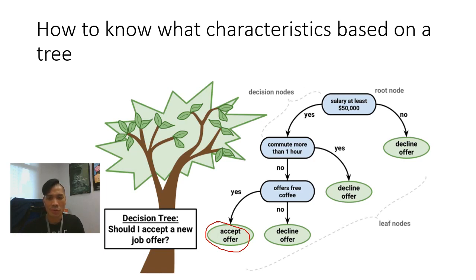If I start from the root node, I'm saying salary at least $50,000. No, I decline offer. Yes, I continue to traverse. Commute more than one hour. If I don't commute more than one hour, then I continue to traverse the tree. But if it's more than one hour, I decline the offer. And then of course, offer free coffee. Yes, obviously who doesn't like coffee?